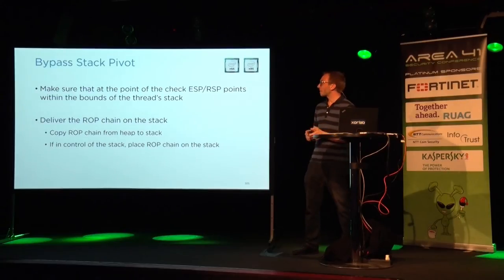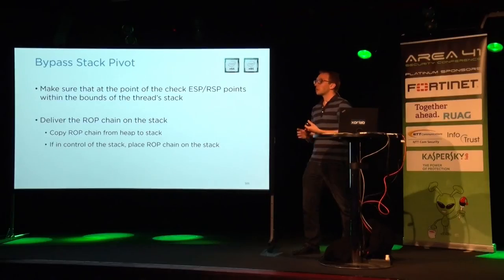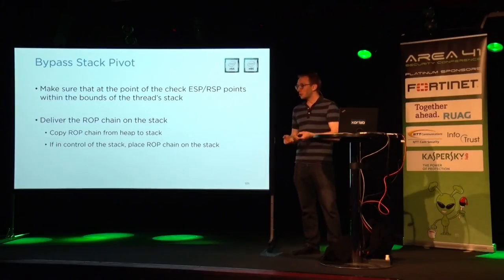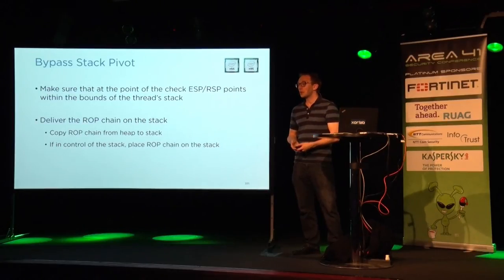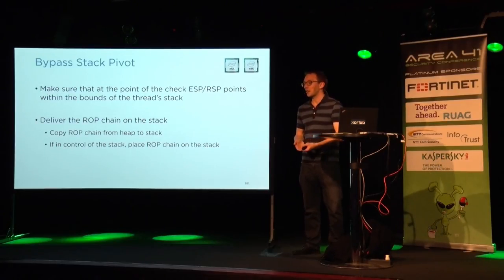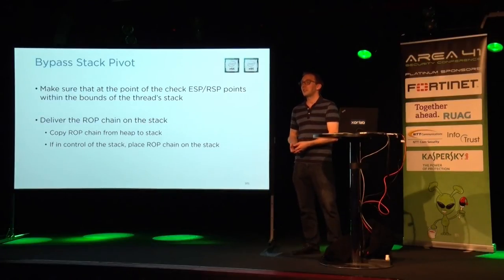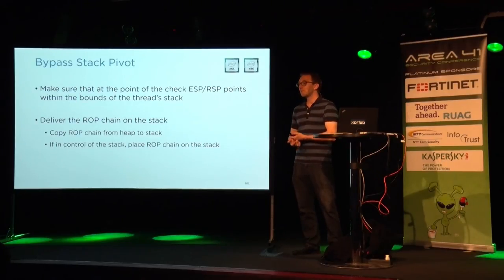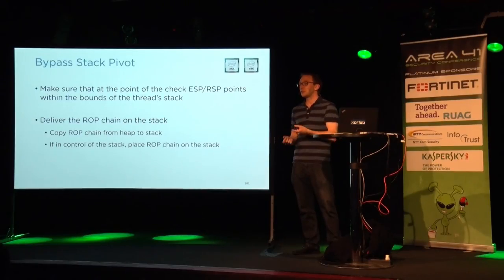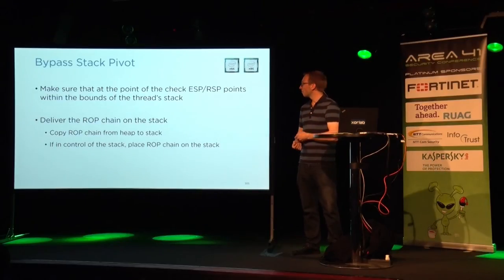Bypassing stack pivoting: you just make sure that when you enter one of these critical functions that EMET protects, your stack pointer actually points to the stack — not to your ROP chain somewhere on the heap. Another option is to deliver the ROP chain to the stack, or copy the ROP chain from the heap to the stack using ROP code.